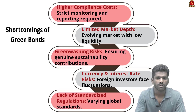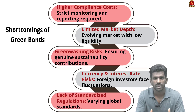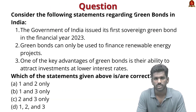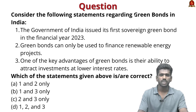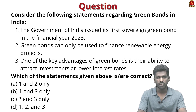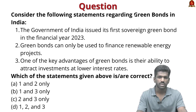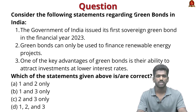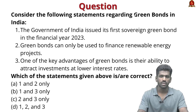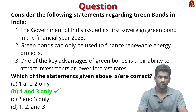Currency and interest rate risk also affects foreign investors due to fluctuations impacting returns. Practice question: India issued its first sovereign green bond in financial year 2023 (correct); green bonds can only be used for renewable energy (incorrect — they also cover other climate resilience infrastructure); green bonds attract investment at lower interest rates (correct). Therefore, statements one and three are correct — the answer is option B.